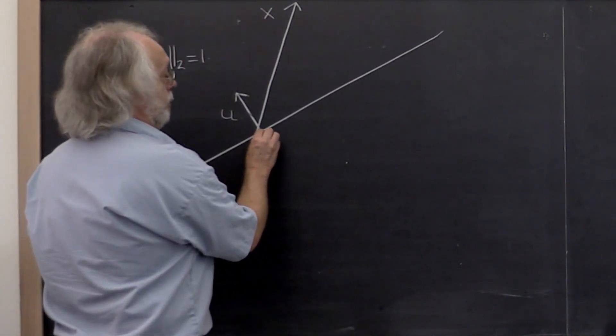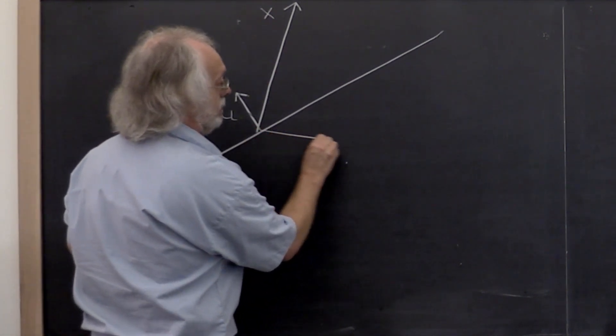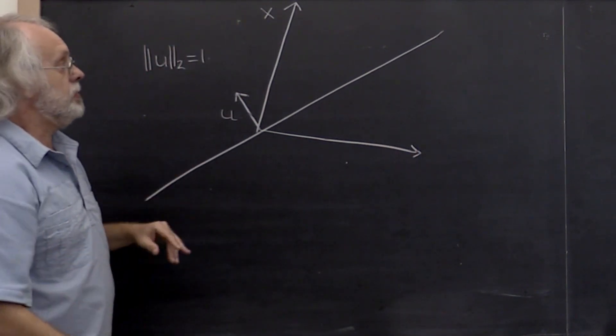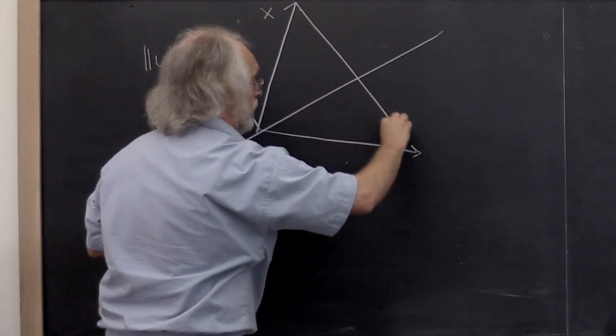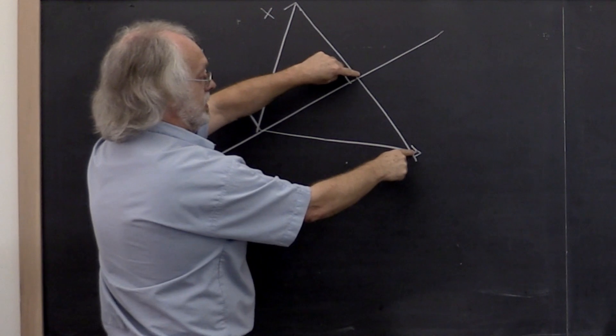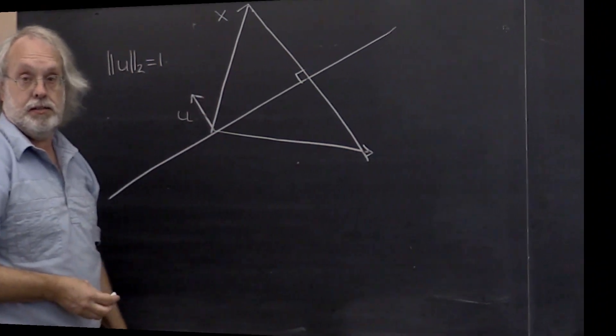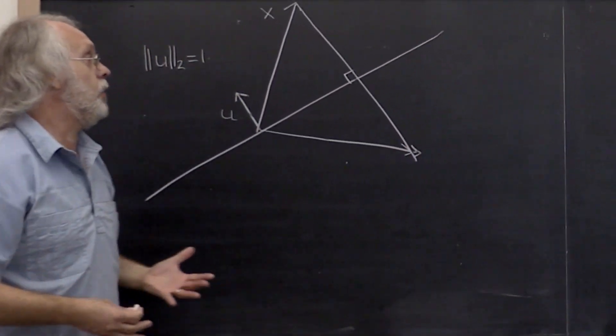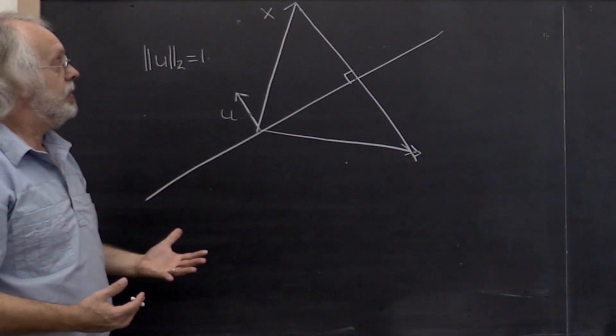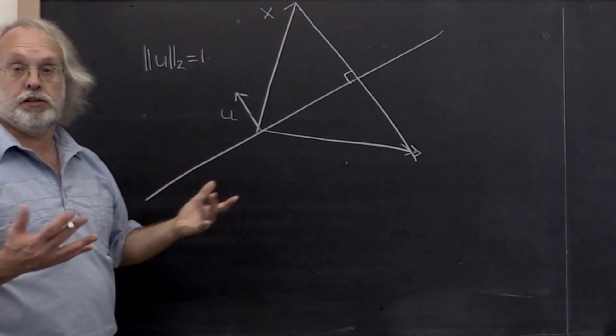And then the reflected vector ends up down here. And how does a mirror work? A mirror works in such a way where this here is a right angle and then this distance is exactly that distance. What our purpose now is, is to come up with a matrix that performs this transformation, that mirrors.